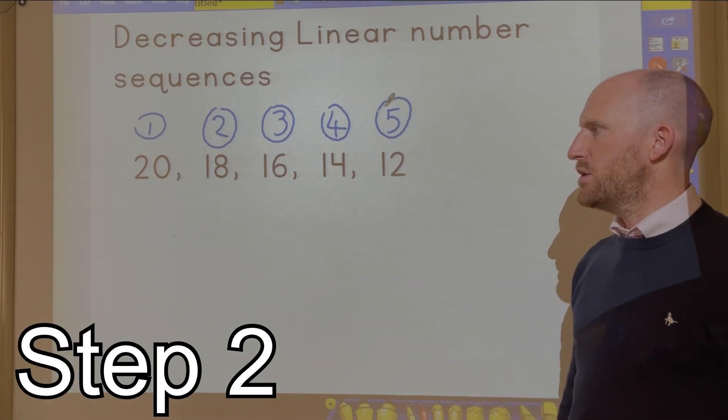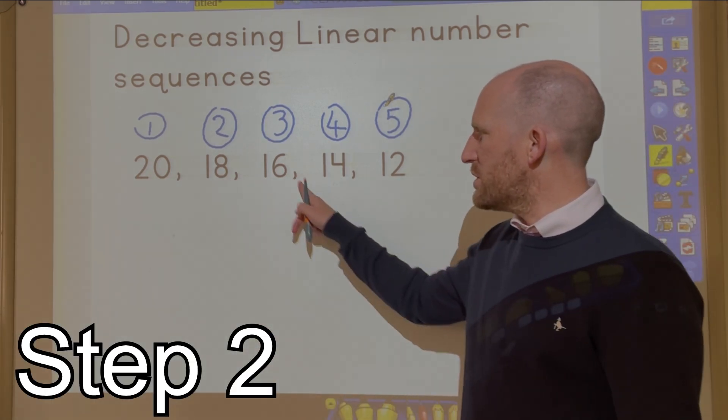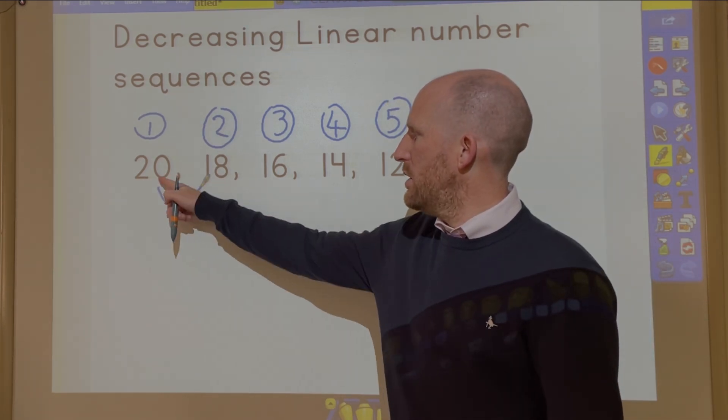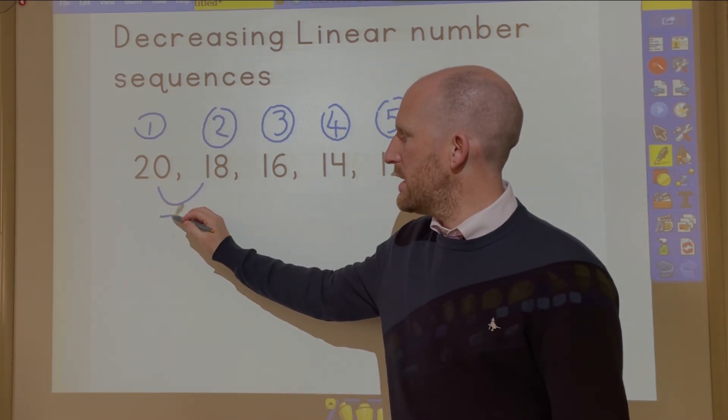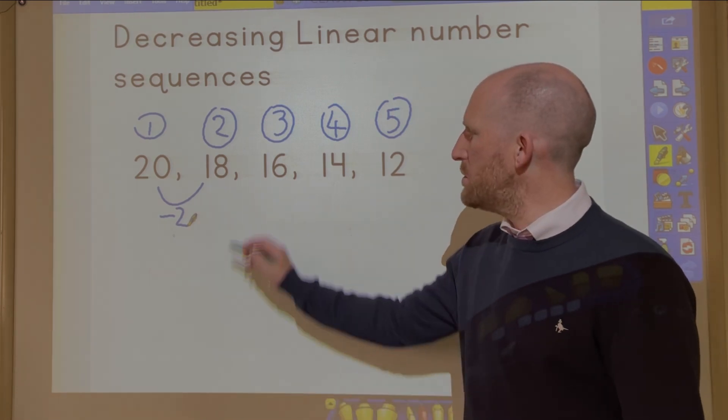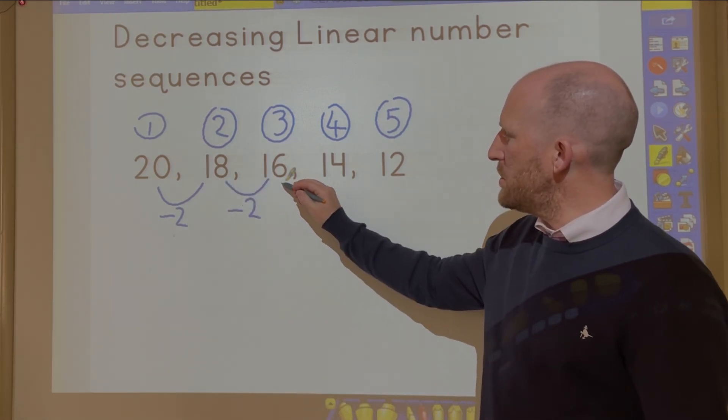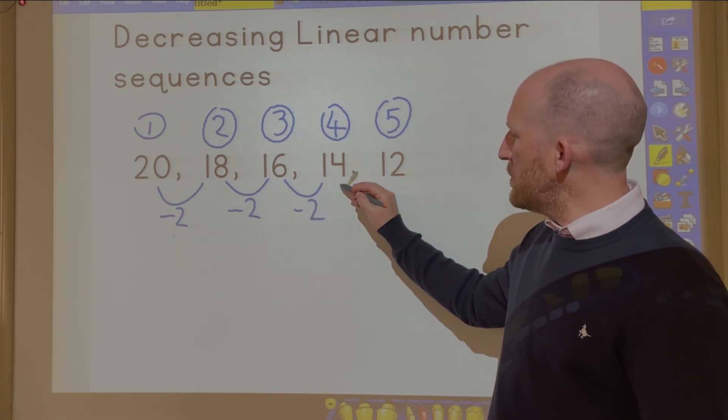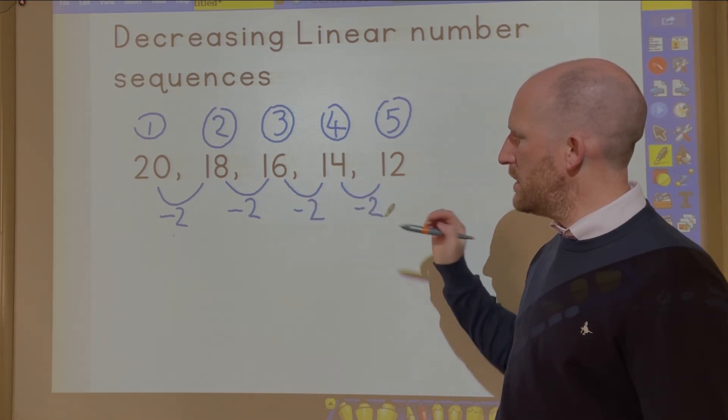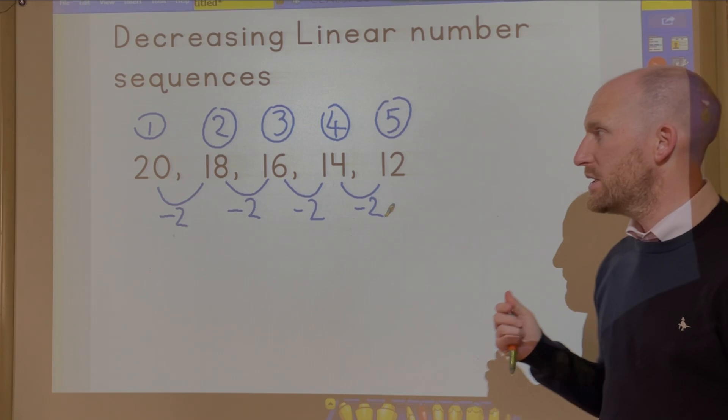Step two is then to find out the difference between the numbers that you have. So between 20 and 18 it is take away 2, between 18 and 16 it is take away 2, and between all of my numbers it is take away 2.